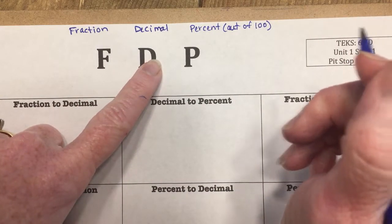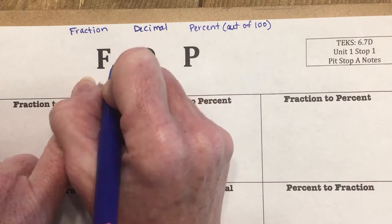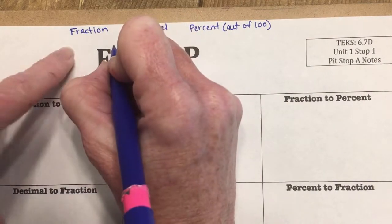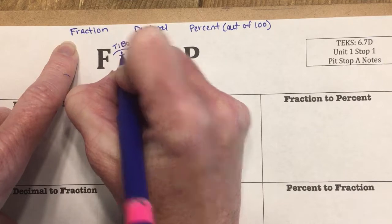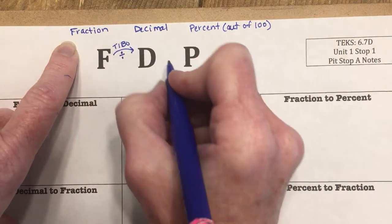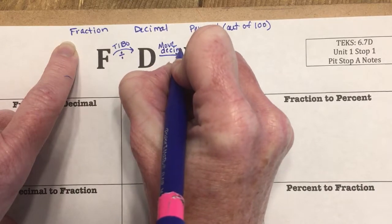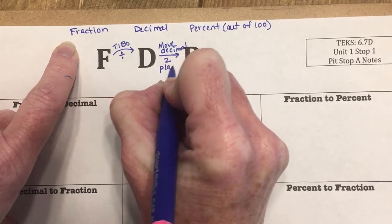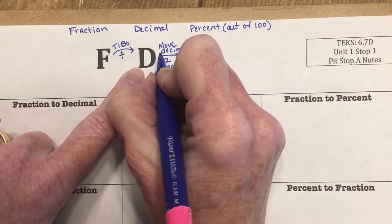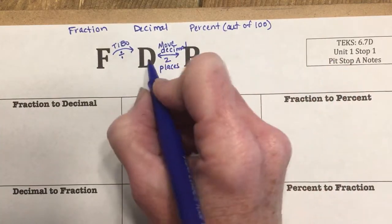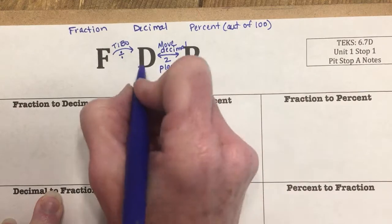This is a tool you'll see in class to help you remember what to do when you need to change from one form to another. Going from a fraction to a decimal, I use a tool called TIBO — top in, bottom out — which means I divide. Going from a decimal to a percent, I move the decimal two places to the right. Going from a percent to a decimal, I move two places to the left.